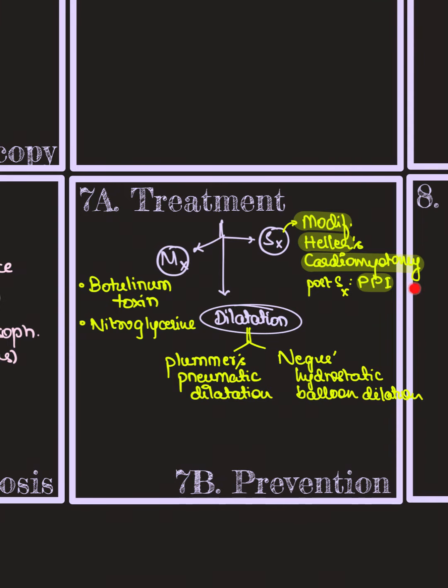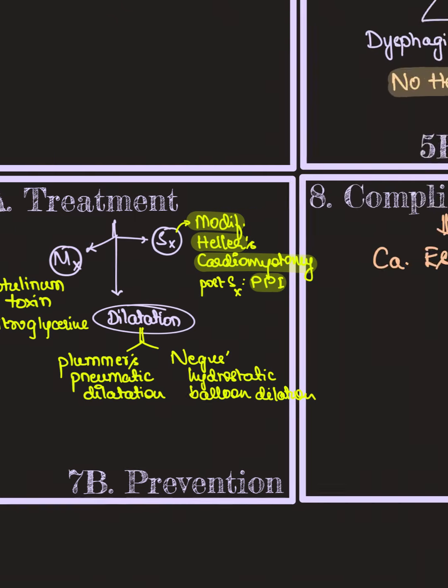But even if that fails, then we go with modified Heller's cardiomyotomy. Remember, it is modified Heller's cardiomyotomy, and post-surgery the person has to be continued with PPIs.